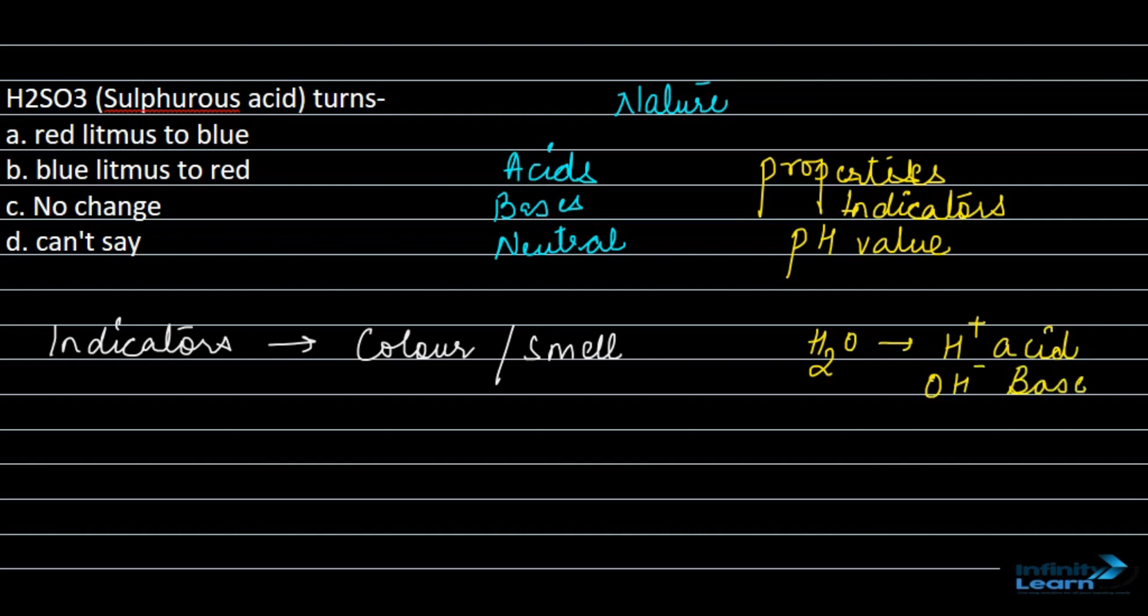Now, here it is already given that it is an acid. If we treat acid with different indicators, we get a definite effect. For example, we have one of our natural indicators as litmus.